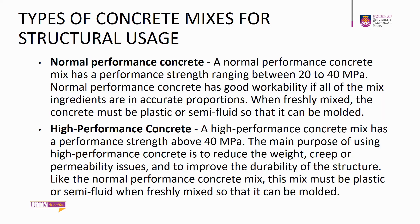Types of concrete mixes for structural usage. Number 1: Normal Performance Concrete. A normal performance concrete mix has a strength ranging between 20 to 40 MPa. It has good workability if all mix ingredients are in accurate proportions, and when freshly mixed, the concrete must be plastic or semi-fluid so that it can be molded. Number 2: High Performance Concrete. A high performance concrete mix has a strength above 40 MPa. Its main purpose is to reduce weight, creep, or permeability issues, and to improve the durability of the structure. Like normal performance concrete, this mix must be plastic or semi-fluid when freshly mixed.